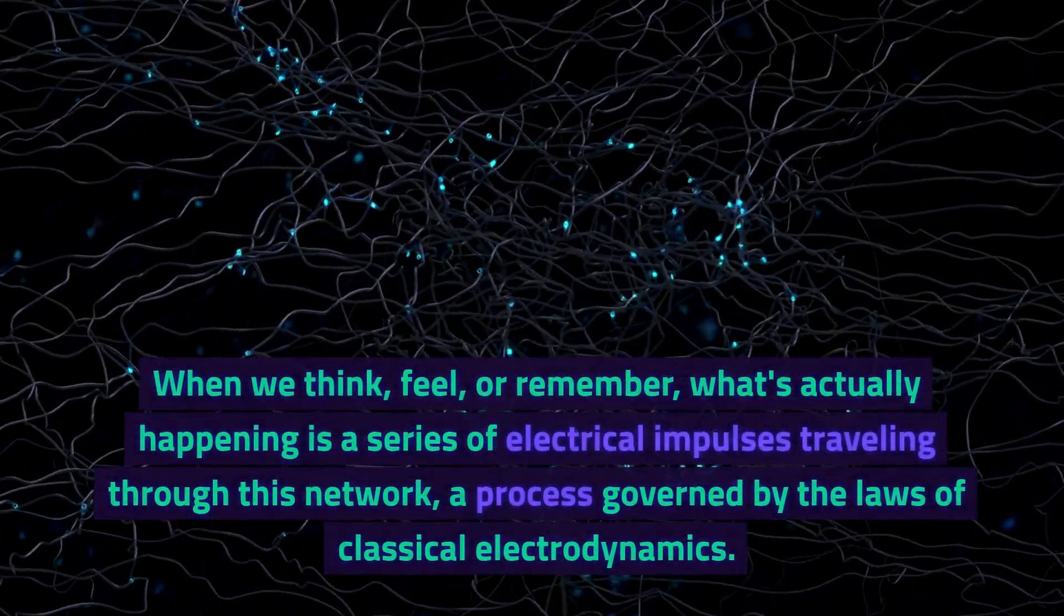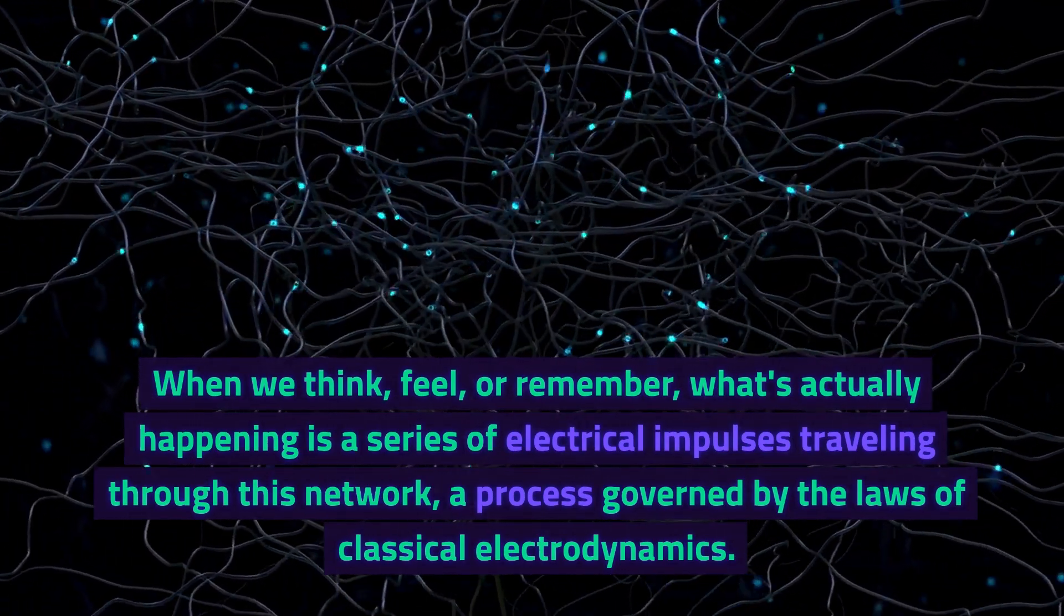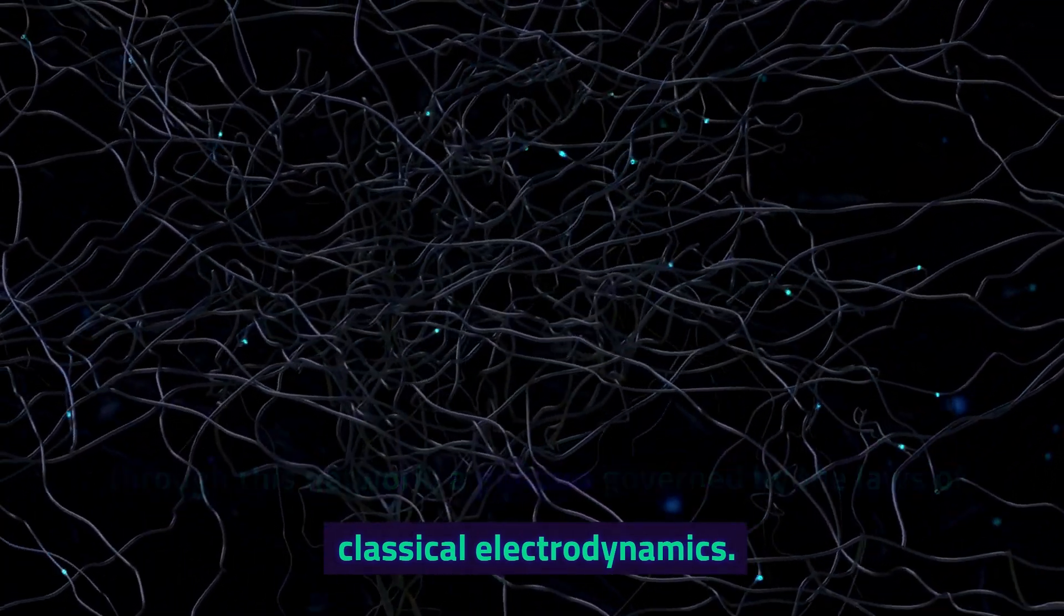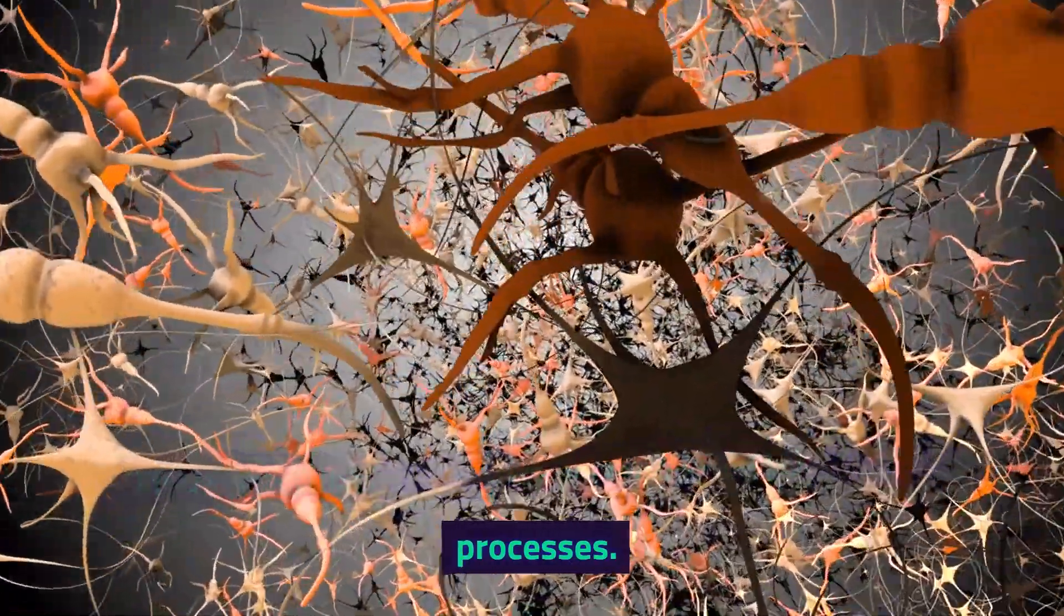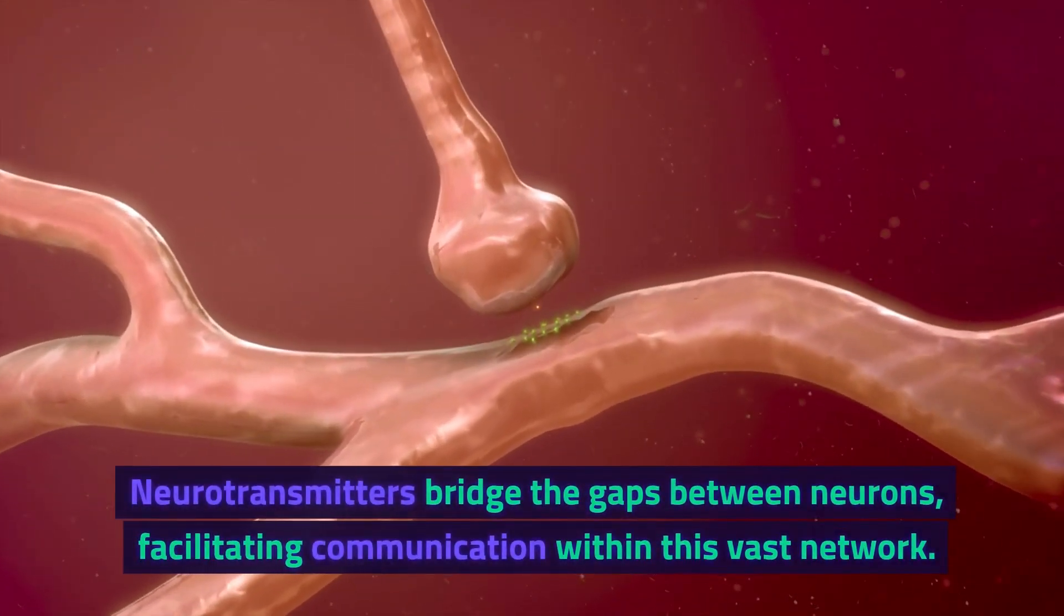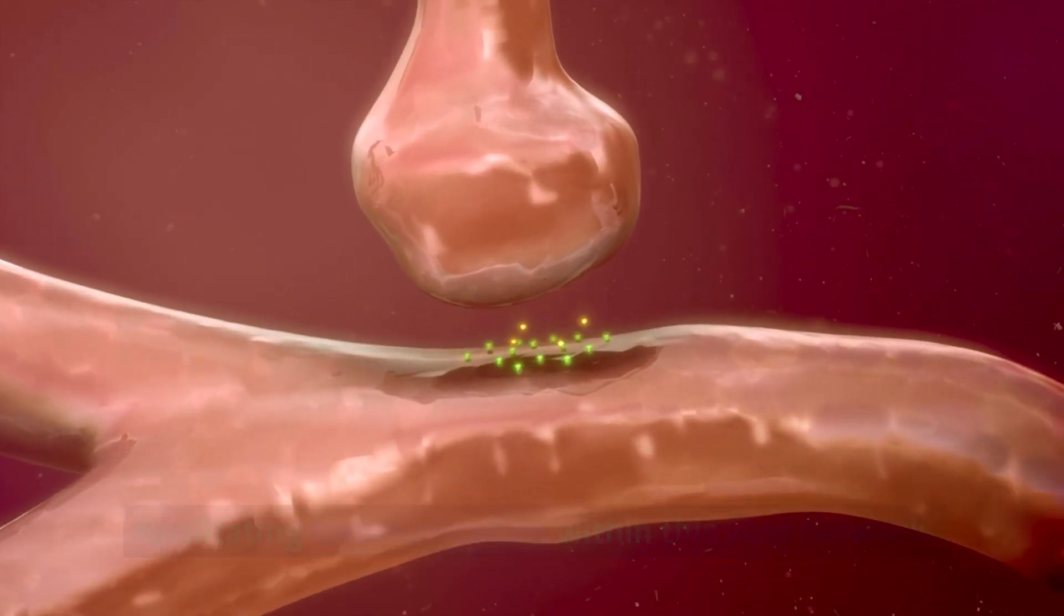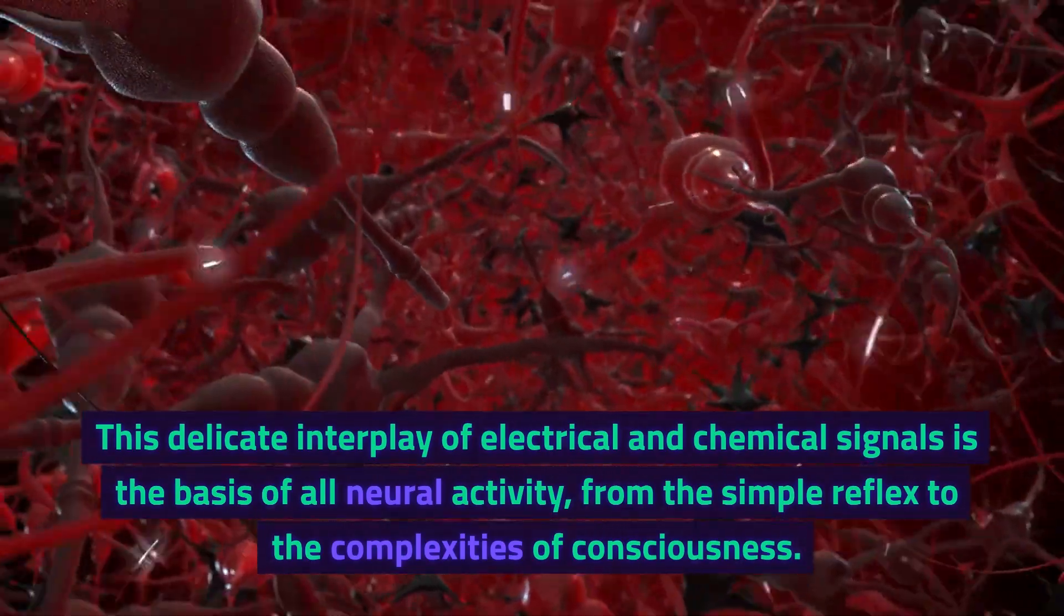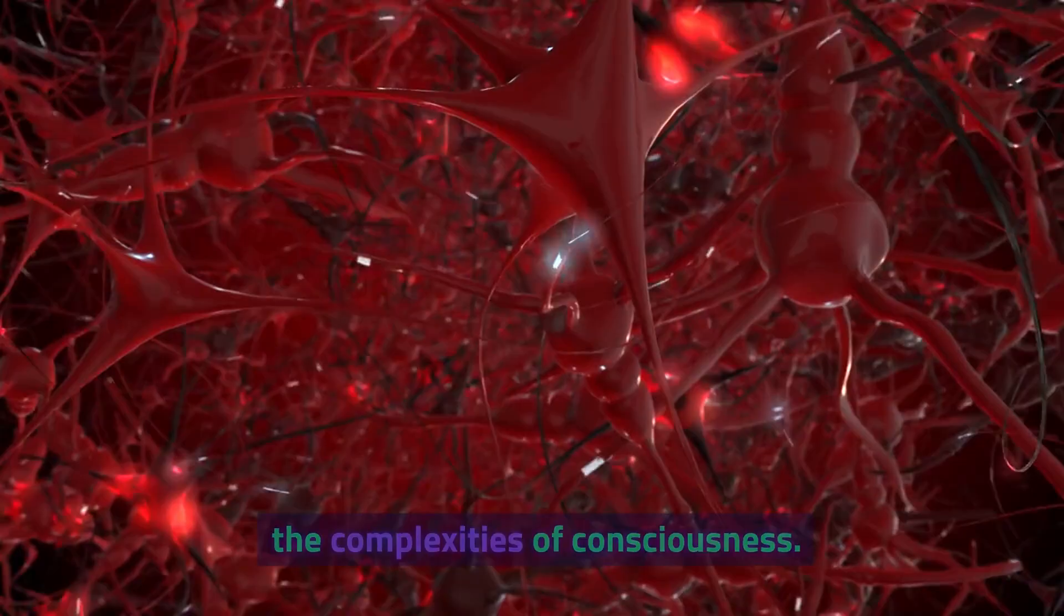When we think, feel, or remember, what's actually happening is a series of electrical impulses traveling through this network, a process governed by the laws of classical electrodynamics. These electrical signals are accompanied by chemical processes. Neurotransmitters bridge the gaps between neurons, facilitating communication within this vast network. This delicate interplay of electrical and chemical signals is the basis of all neural activity, from the simple reflex to the complexities of consciousness.